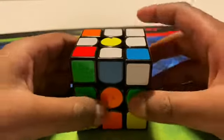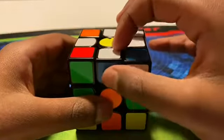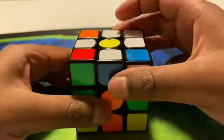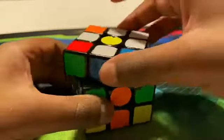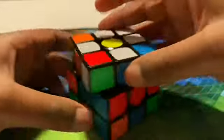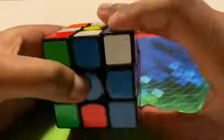After we solve the daisy, we have to line up the other color with the middle pieces. So on this middle piece right here, there is a blue color. So we line it up with the blue center piece and we turn the side twice.